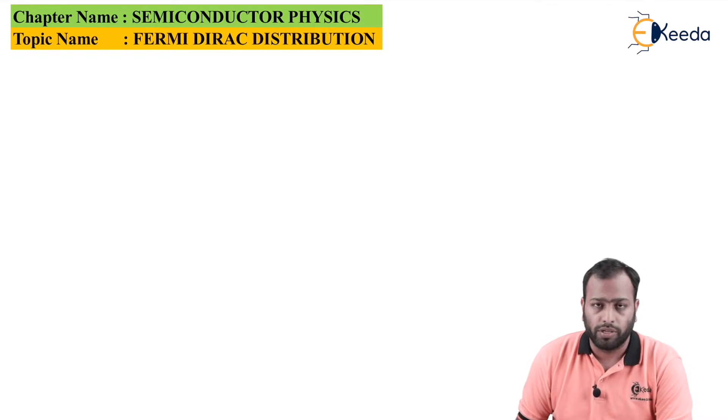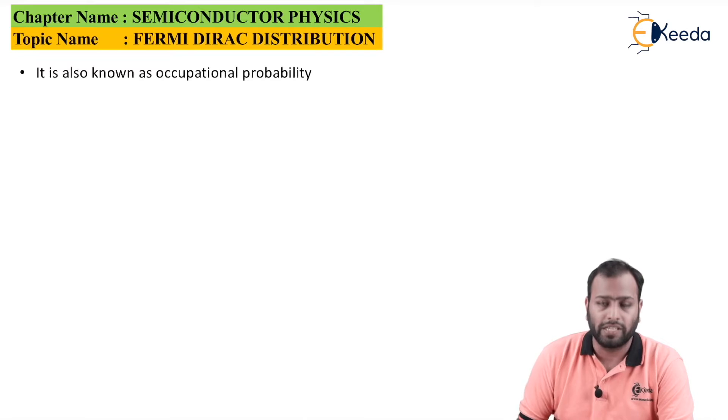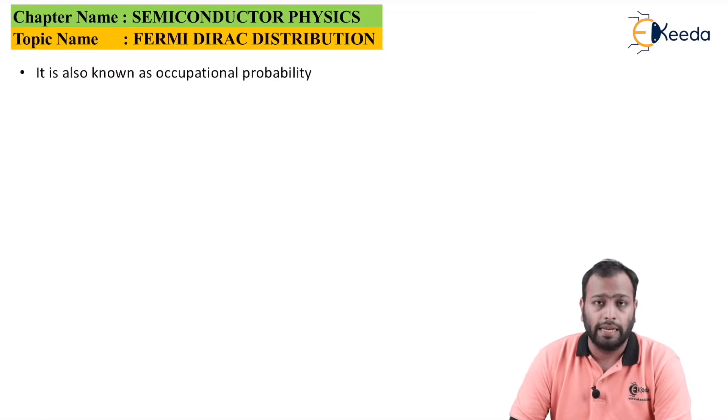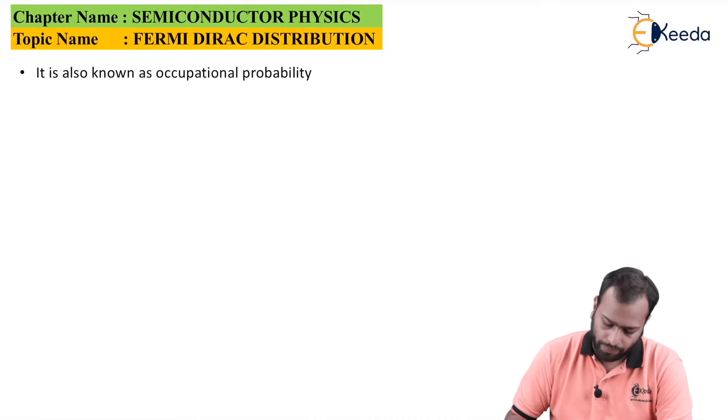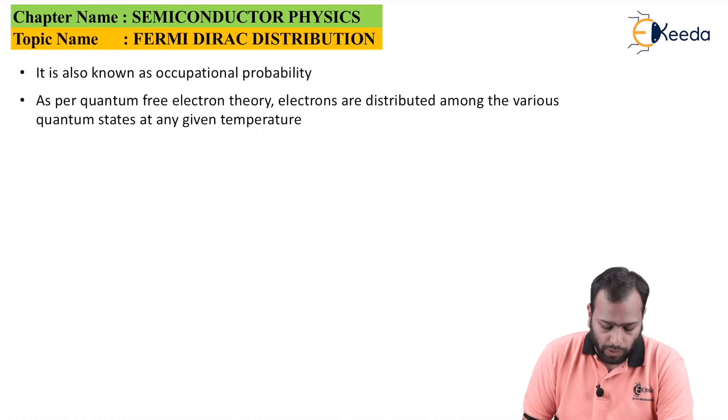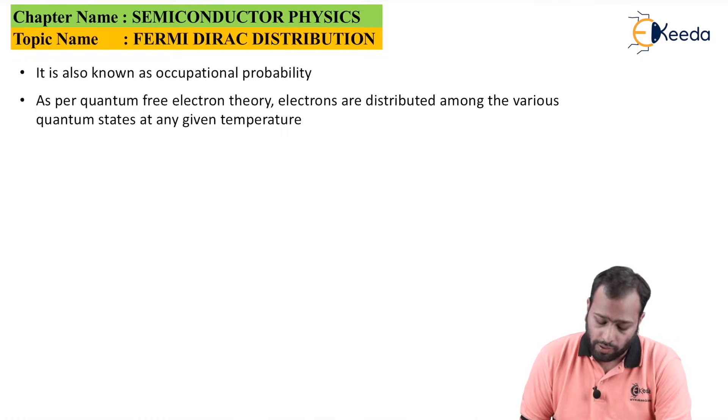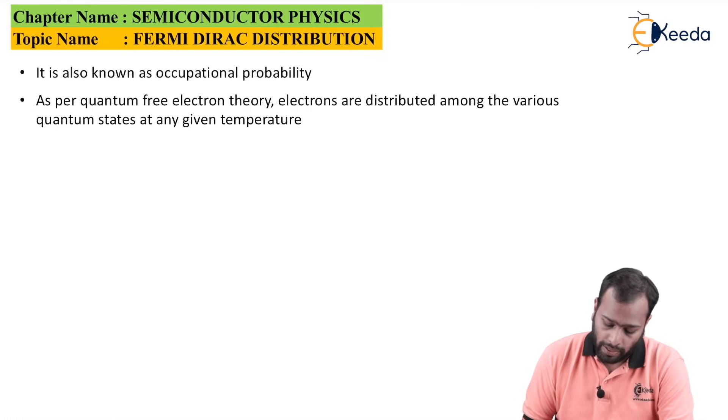Fermi-Dirac distribution is also known as the occupational probability. It is basically a probability distribution function which states the probability of finding an electron at a given energy level. As per quantum free electron theory, electrons are distributed among the various quantum states at any given temperature.